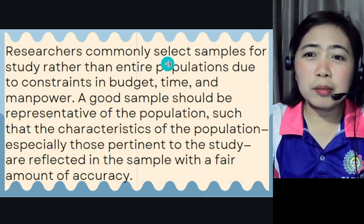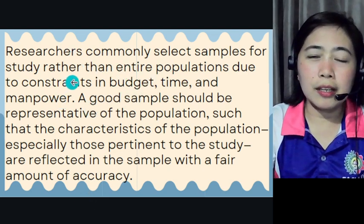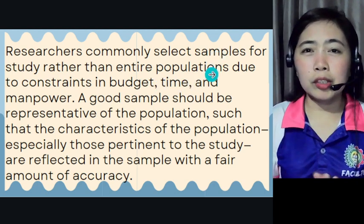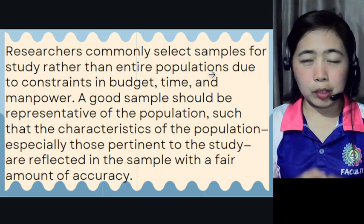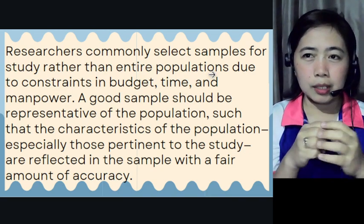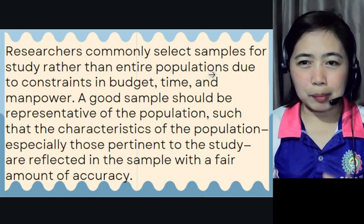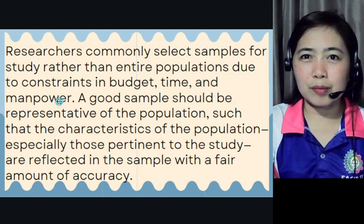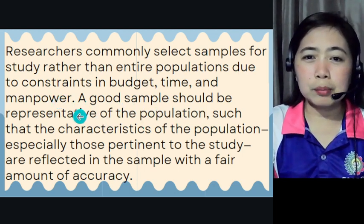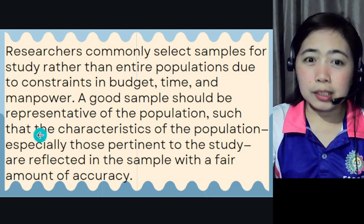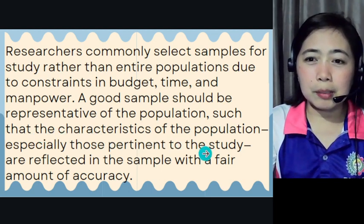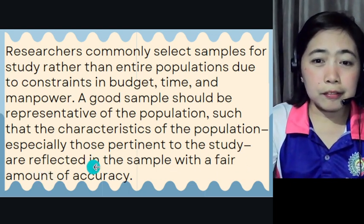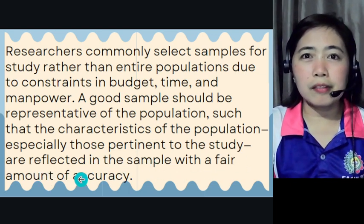There is a tag-population — the big group — and a tag-sample, where you take only a portion of that population. Due to constraints in budget, time, and manpower, a good sample should be representative of the population such that the characteristics of the population, especially those pertinent to the study, are reflected in the sample with a fair amount of accuracy.